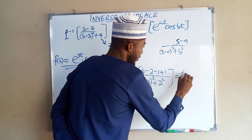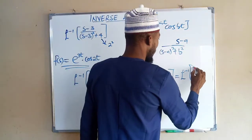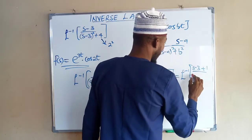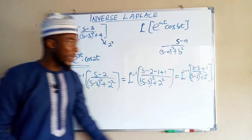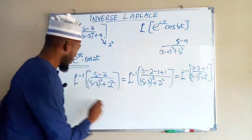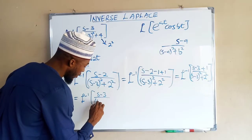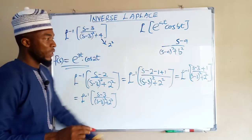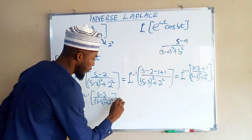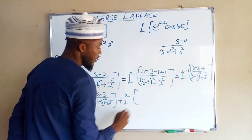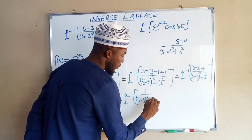We can split this into two separate inverse Laplace transforms. Writing s minus 2 minus 1 as (s minus 3) plus 1, we get the inverse Laplace transform of (s minus 3) over (s minus 3)² plus 2², plus the inverse Laplace transform of 1 over (s minus 3)² plus 2².